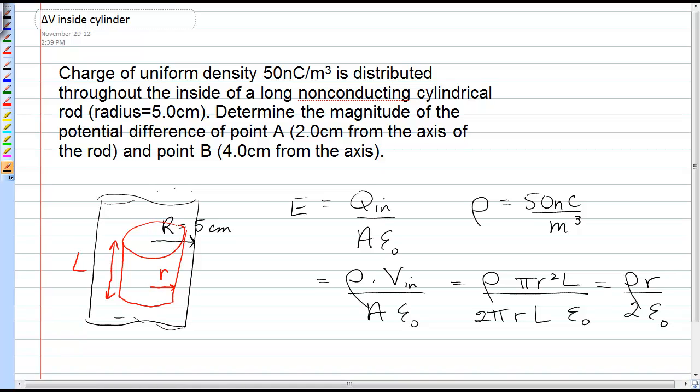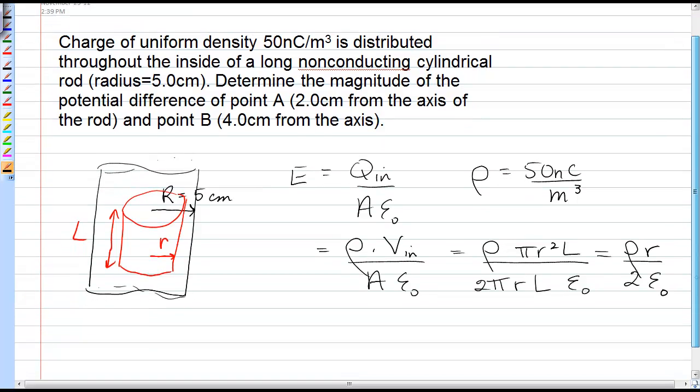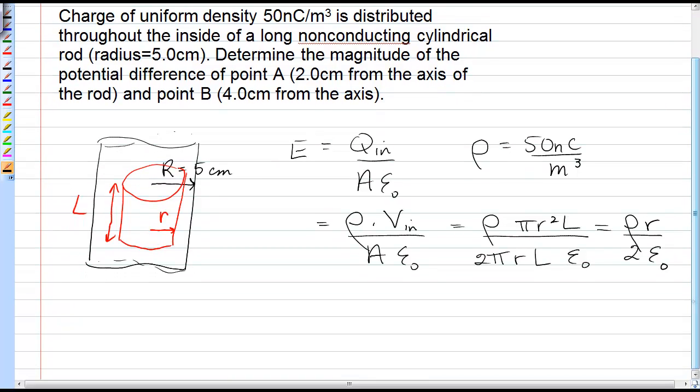Now once we have the electric field, we see that it is not a uniform electric field. So if we want to calculate the difference in voltage between any two points, the equation that we use is the integral of the electric field r component times dr. And we would want to go between points A and B.